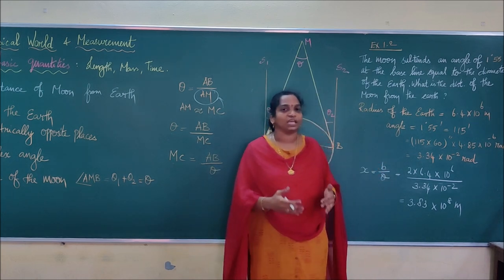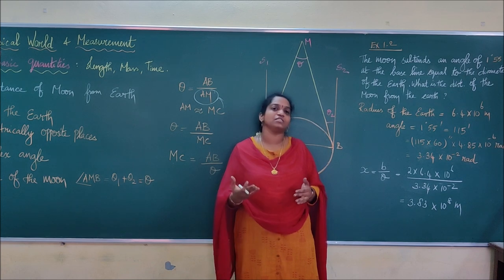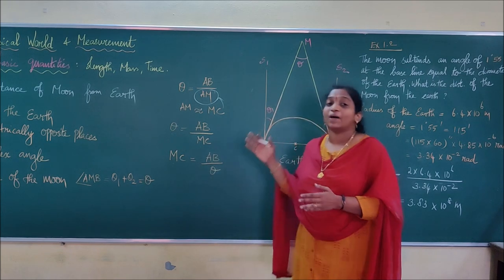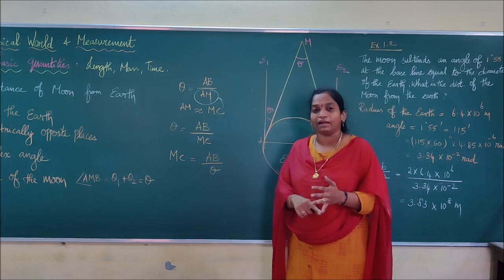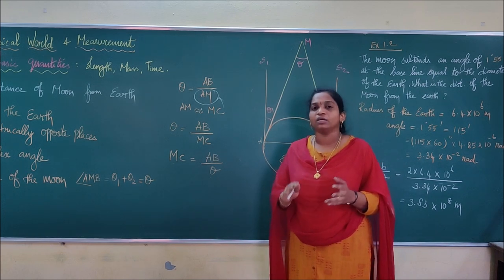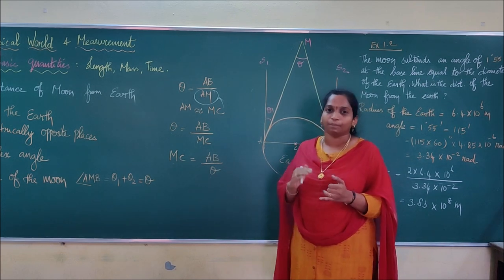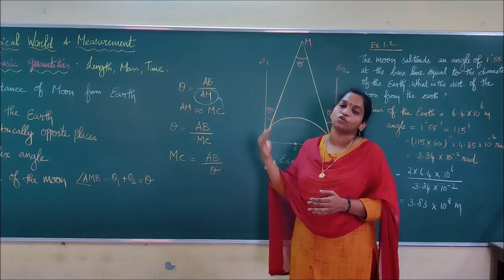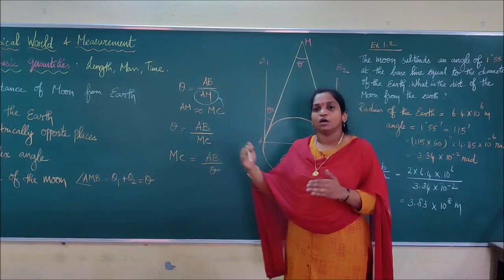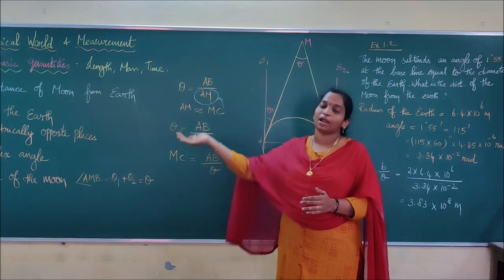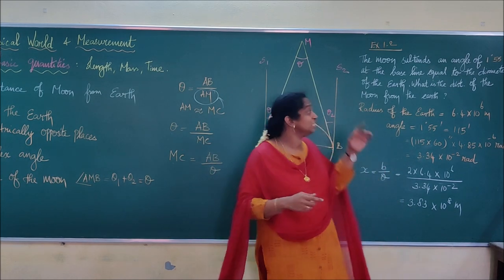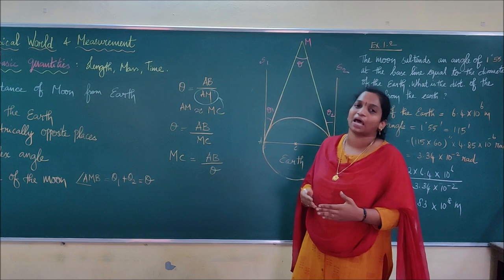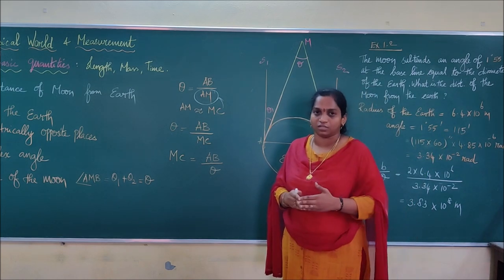The triangular method helps find the distance or height of a building, tree, or nearby object, while the parallax method helps find the distance of a star, moon, or planet up to about 100 light years. Beyond 100 light years, we cannot use the parallax method because the angle theta becomes too small to measure accurately.